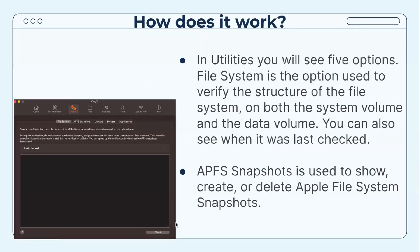In Utilities, you will see five options. File System is the option used to verify the structure of the file system on both the system volume and the data volume — you can also see when it was last checked. APFS Snapshots is used to show, create, or delete Apple File System snapshots.